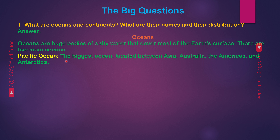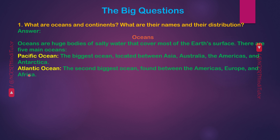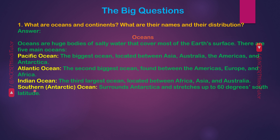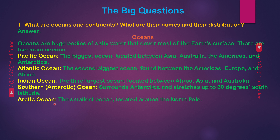First, the Pacific Ocean — the biggest ocean, located between Asia, Australia, the Americas, and Antarctica. Second, the Atlantic Ocean — the second biggest ocean, found between the Americas, Europe, and Africa. Third, the Indian Ocean — the third largest ocean, located between Africa, Asia, and Australia. Fourth, the Southern (or Antarctic) Ocean — surrounds Antarctica and stretches up to 60 degrees south latitude. Fifth, the Arctic Ocean — the smallest ocean, located around the North Pole.